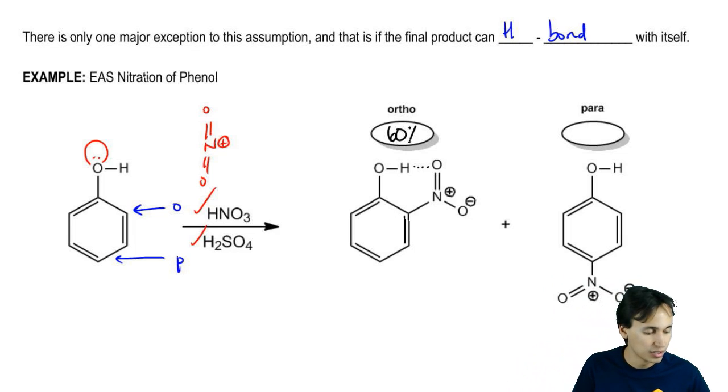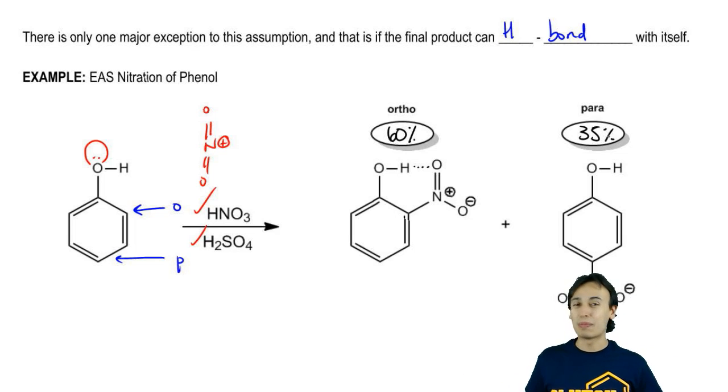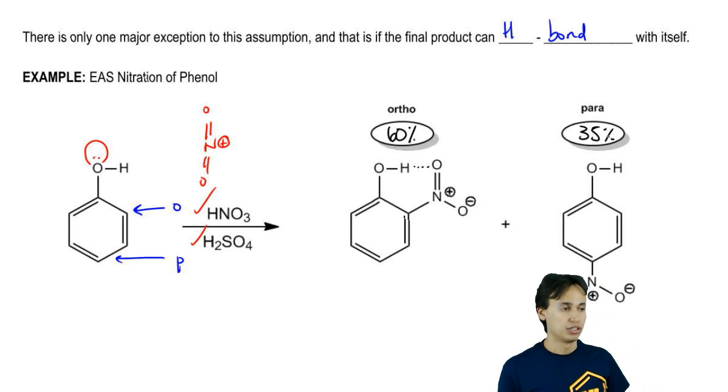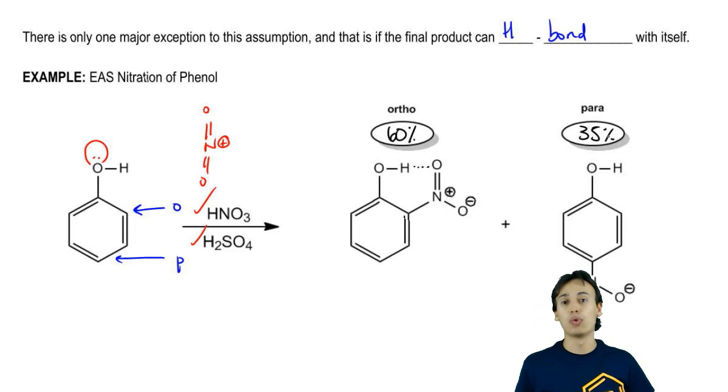This ratio actually isn't as big of a difference as you might think. It's actually only going to be a 60% to 35% ratio. Meaning that it's not even winning by that much but still, this would be the only exception where we would expect more ortho. But for everything else, if asked to supply one major product – I mean you can always say it's a mixture – but if you're asked to supply one, you're usually going to go with the para product because it's the one that's less sterically hindered.